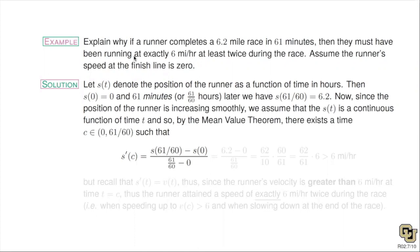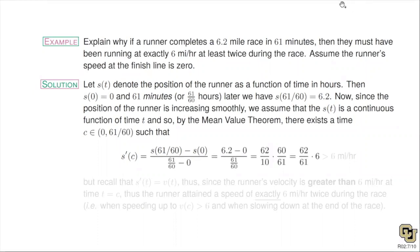We assume the position function is continuous and differentiable — the runner runs the whole time without stopping. So the mean value theorem applies on the interval from time 0 to 61/60. There exists some time c such that s prime(c) = [s(61/60) − s(0)] / (61/60). Now we compare this to 6 miles per hour. Writing 6.2 as 62/10, and dividing by 61/60 means multiplying by the reciprocal, giving 62 × 60 / (61 × 10) = 62/61 × 6.